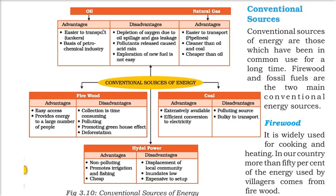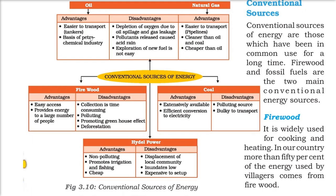Pollutants released cause acid rain. Because they are mainly in gaseous form, they go up into the troposphere, and when rain comes, these acidic pollutants come down and mix with water and various surfaces, contaminating the environment. Also, exploration of new oil fields is not very easy.